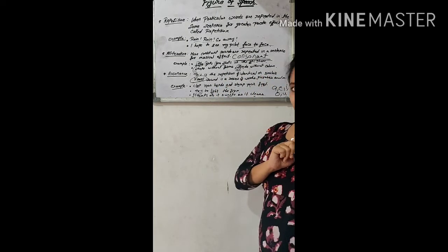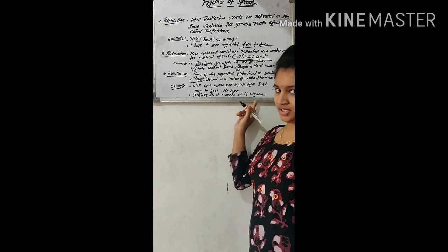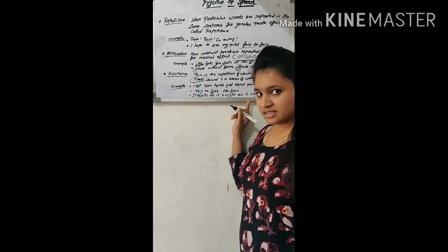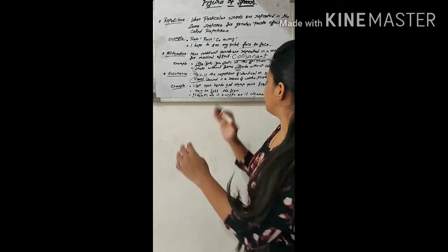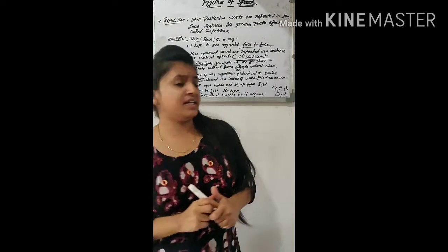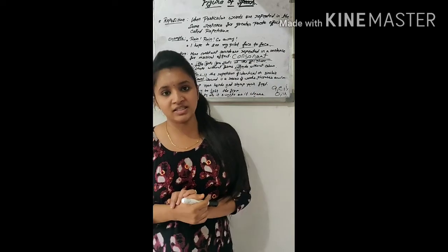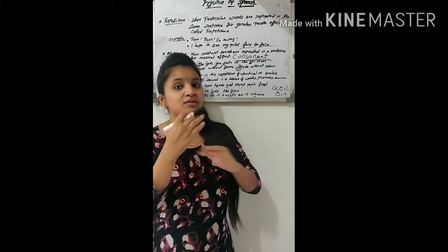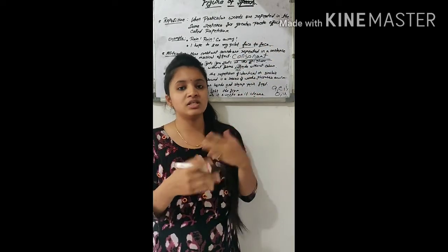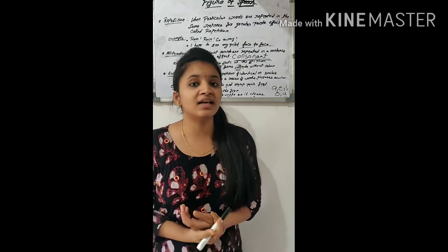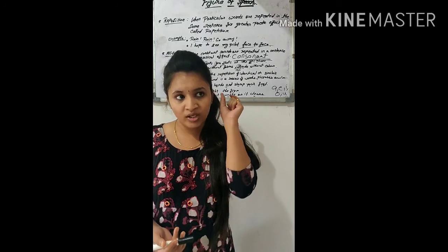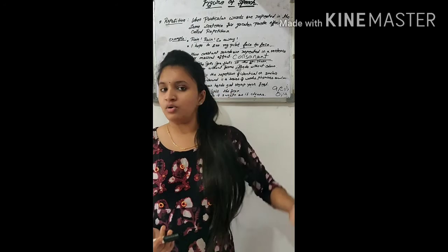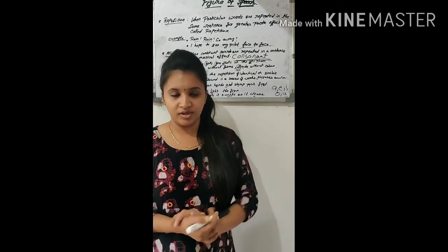Another example: 'It beats as it sweeps as it cleans' — the vowel 'e' is repeated everywhere, so again we consider it assonance. To summarize, all three — repetition, alliteration, and assonance — are similar in that they all involve the repetition of either a letter or a word.